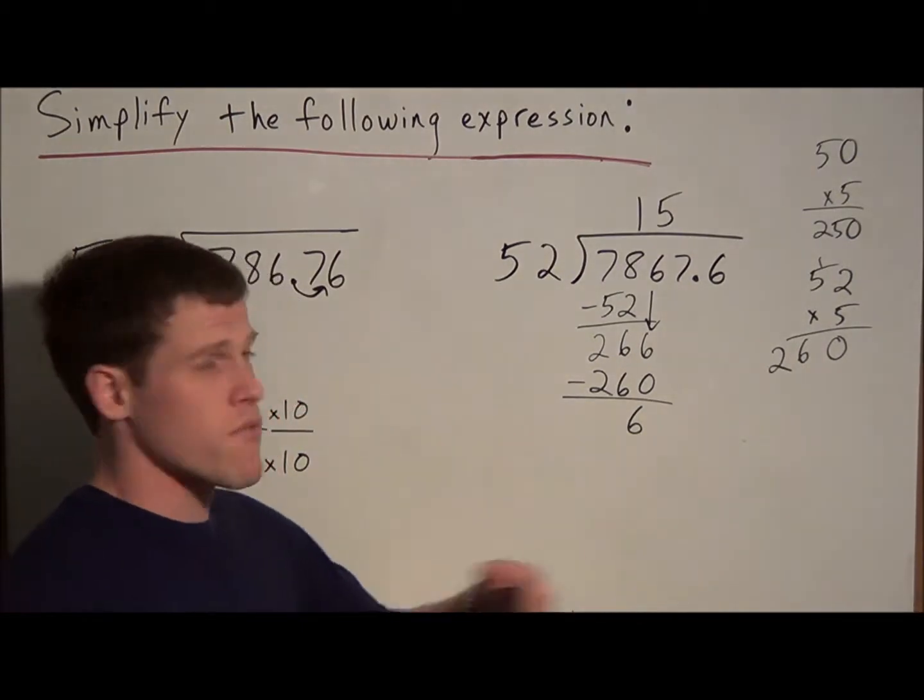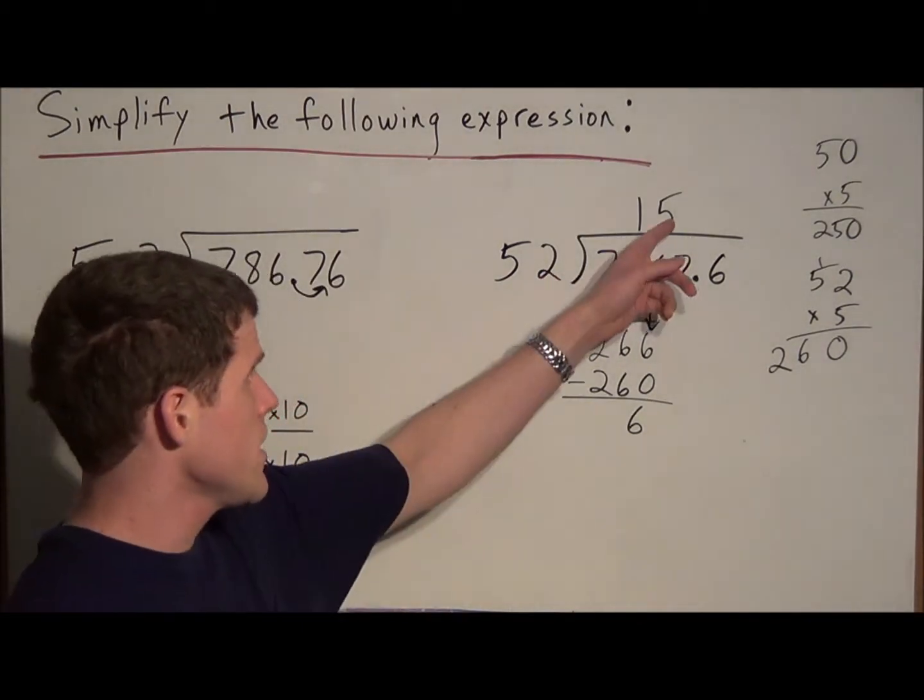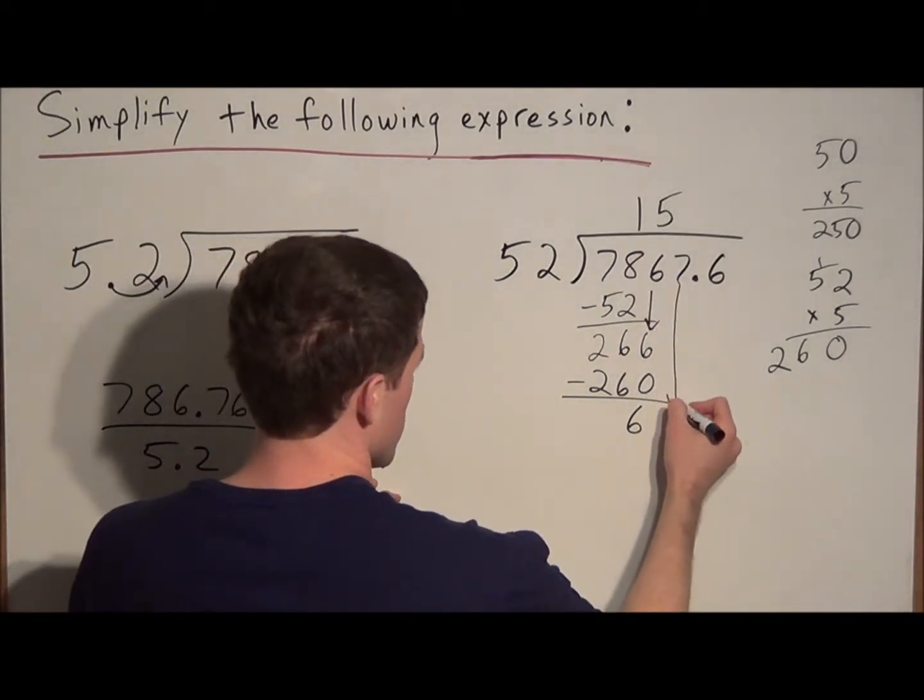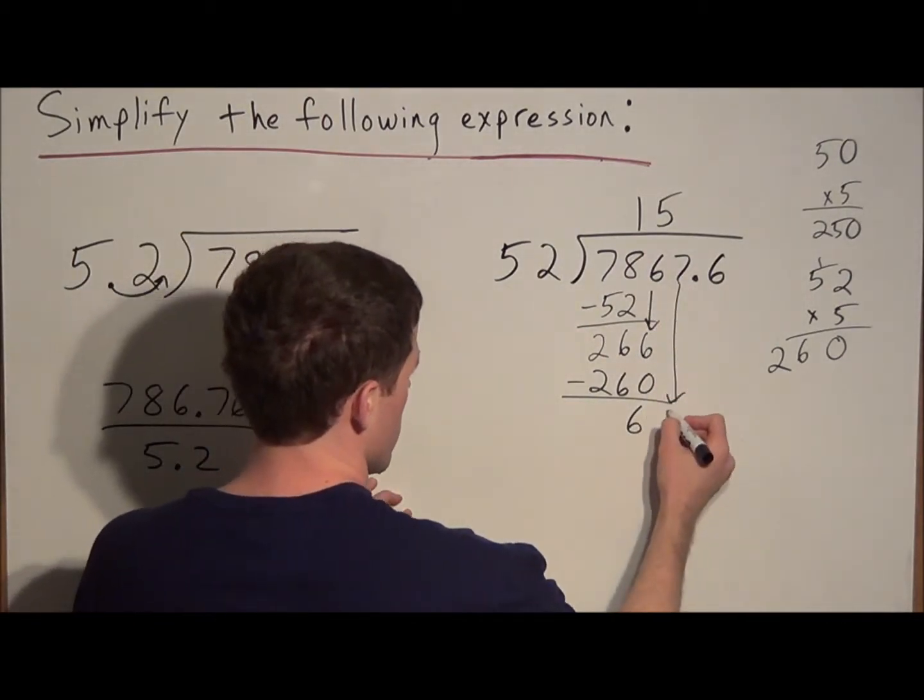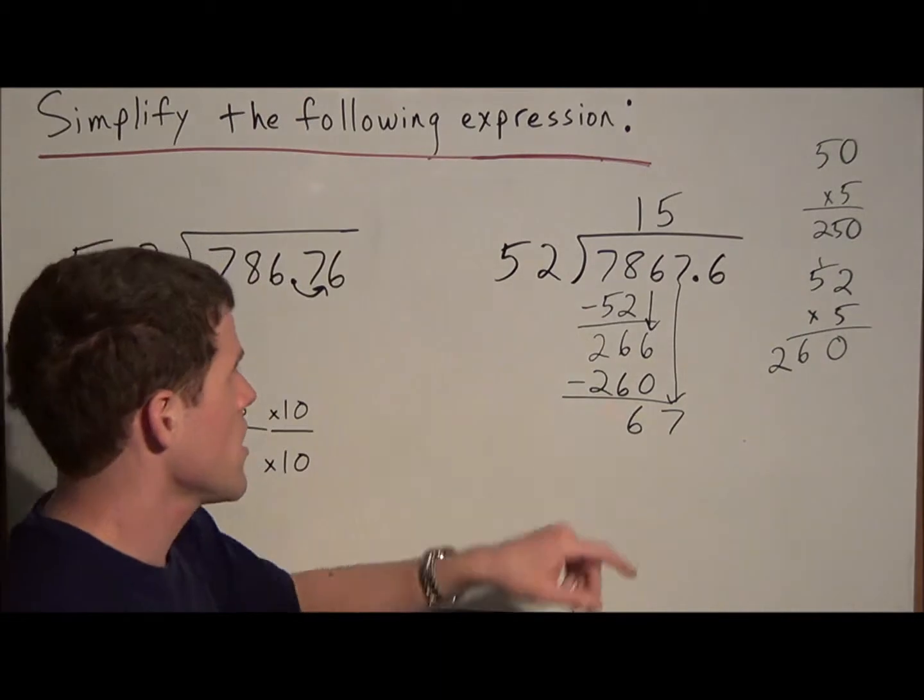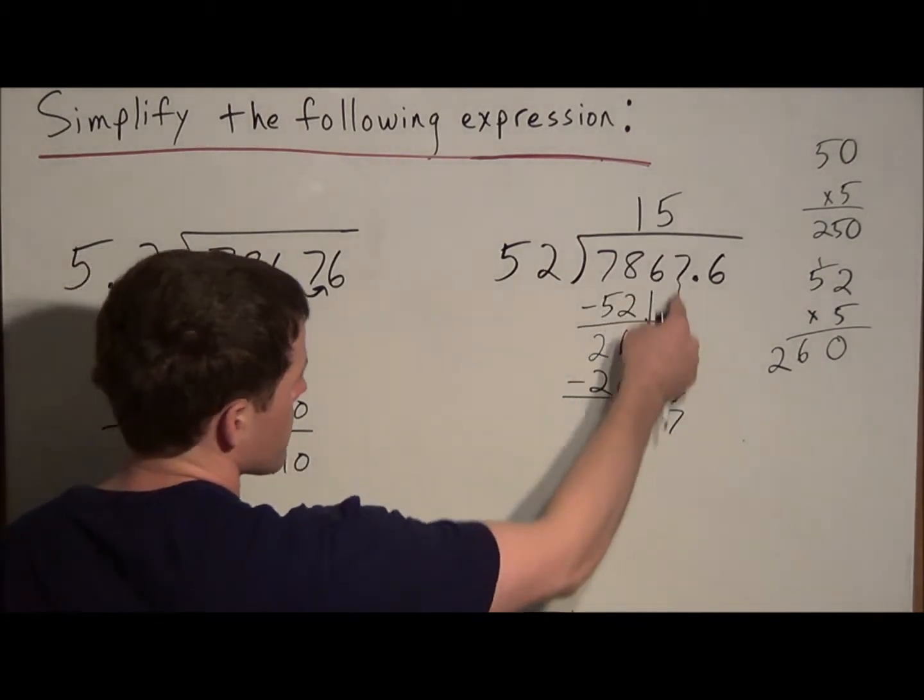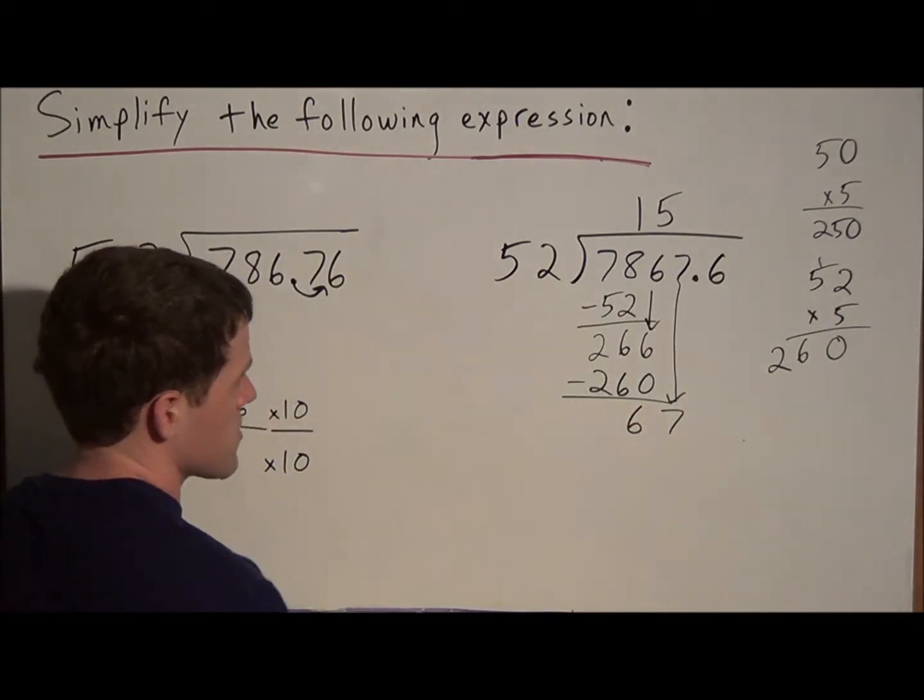So this remainder of 6, remember, each time we divide and then subtract, we have to carry down the next number, here like this, so we're carrying down a 7 now. So notice, once we subtracted 260, we had a remainder of 6, but then we bring down the next number, which is 67.